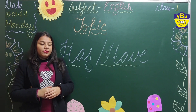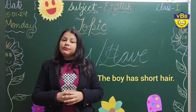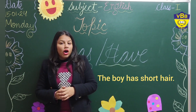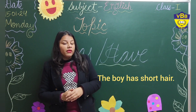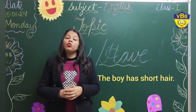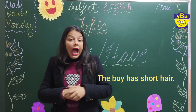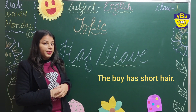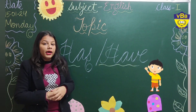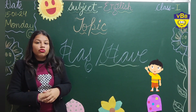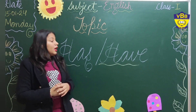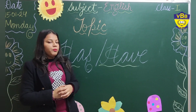Let's take one more example: The boy has short hair. Here we are talking about only one boy. The boy has short hair. So here the hair belongs to the boy. That is why we have used 'has.'